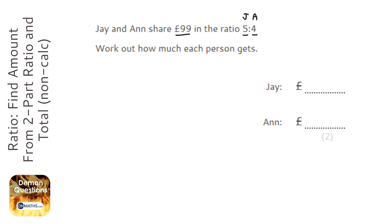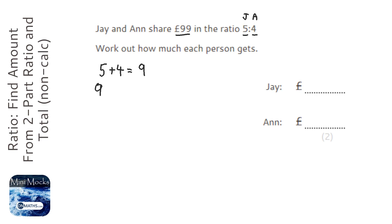First step, we've got to work out how many piles there are in total. So we add 5 and 4 together and there's going to be 9 piles of cash. Second step, we've got to work out how much is going to be in each of those piles. So we get the 99 and we divide it by the amount of piles. We want the same amount of money in each pile, so that's going to be 11.